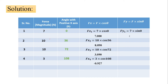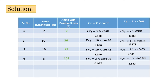For the Fy components: Fy1 equals 7 sin 0°, Fy2 equals 10 sin 36°, Fy3 equals 10 sin 72°, and Fy4 equals 3 sin 108°. This column formula remains constant — Fx is always F cos theta and Fy is always F sin theta.